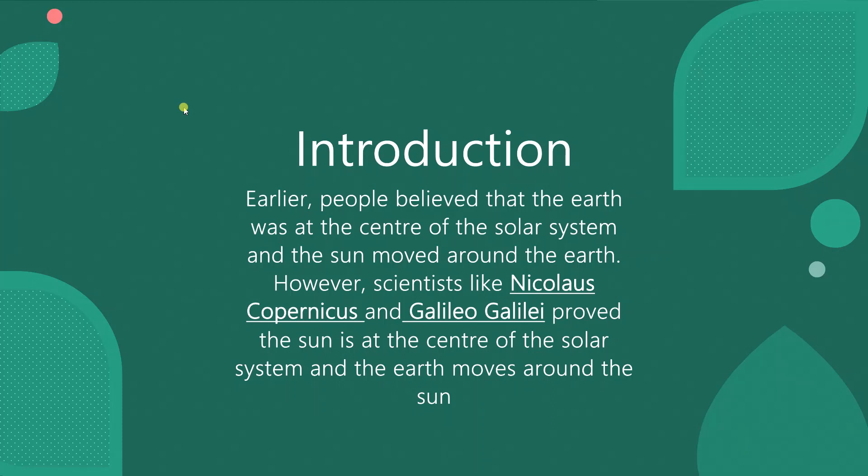Earlier, people believed that the earth was at the center of the solar system and the sun moved around the earth. However, scientists like Nicholas Copernicus and Galileo Galilei proved the sun is at the center of the solar system and the earth moves around the sun.